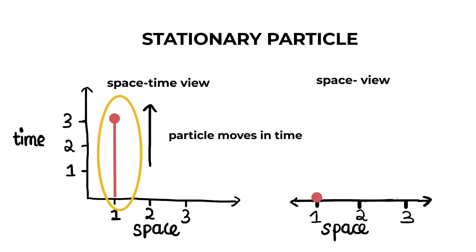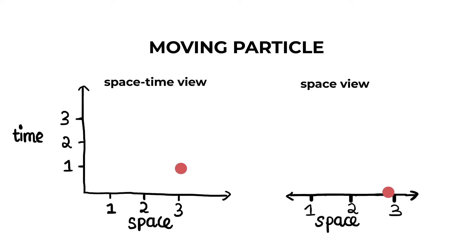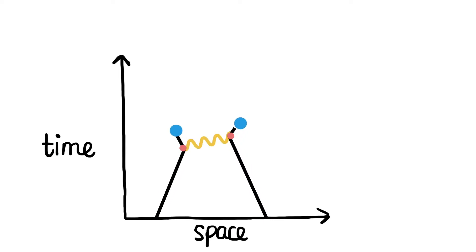So, a stationary particle will trace a straight path and a moving particle will trace a tilted path. Drawing that same collision between electrons on spacetime gives us a Feynman diagram.